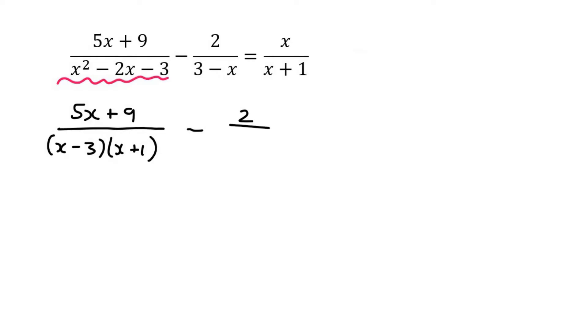Then I'm just going to write out the rest. Now x plus 1 is the same as x plus 1, but 3 minus x is not the same as x minus 3. So we need to switch one of them.